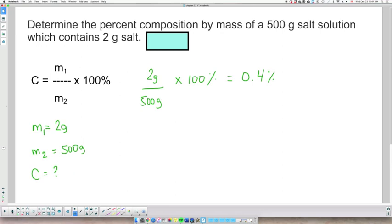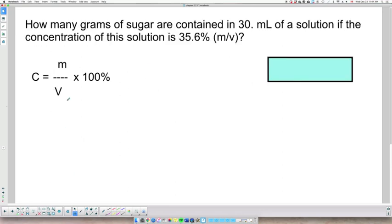Case number two, we have a mass over a volume, so it says, how many grams of sugar are contained in 30 milliliters of a solution if the concentration of the solution is 35.6%?